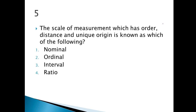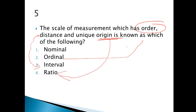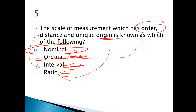Next question: the scale of measurement which has order — order is in ordinal; distance — distance is in interval; unique origin — origin is in ratio. So all three qualities are found in ratio. If we talk about ratio, nominal has its qualities, ordinal has its, interval has its. Two qualities would be ordinal and nominal; best measure in order, distance, and origin — all these things I explained in the last question.